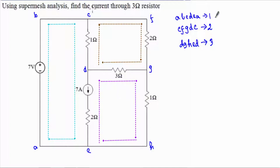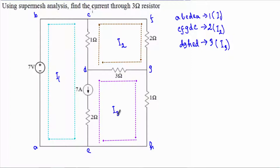After that I have to assign independent loop currents for each loop. The current for mesh 1 will be I1, for mesh 2 will be I2, and for mesh 3 will be I3. I will assume I1, I2, and I3 are all flowing in the clockwise direction.